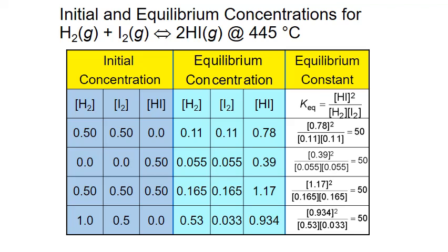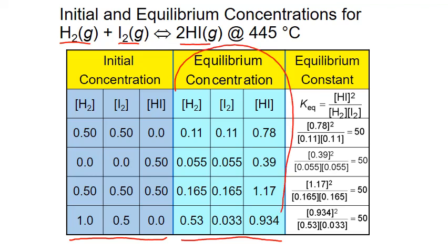This is exactly what we did in this example calculation from a previous PowerPoint. Here we have the concentrations of our two reactants hydrogen gas and iodine gas, as well as the concentration of our product hydrogen iodide gas. For each of the four trials listed here, the concentrations were measured initially at time zero before the reaction began, and then all concentrations were measured again when the reaction had reached equilibrium or steady state. These steady state concentrations outlined in aqua were then substituted into the equilibrium expression to calculate the equilibrium constant.